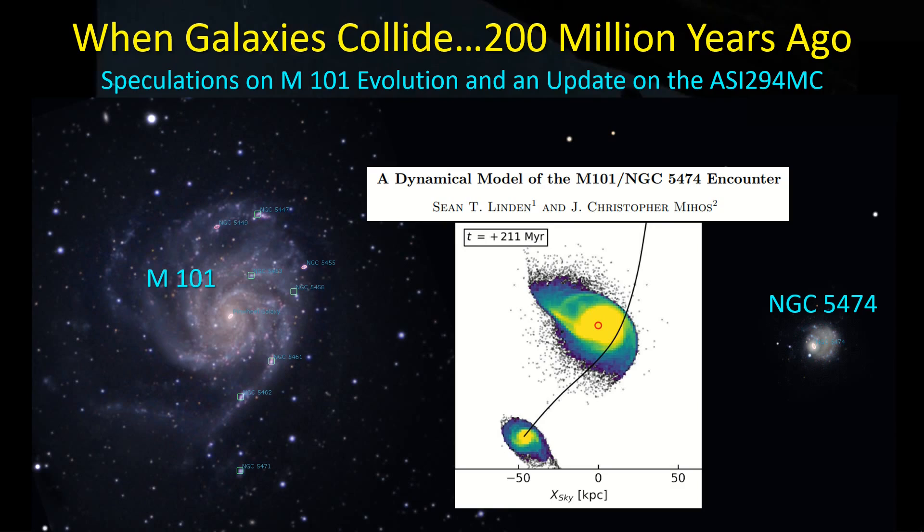I thought I'd share some of my experience with that setup, but I also stumbled across a paper that describes how some of the features we see with M101 may have been created by a fly-through event some 200 million years ago between M101 and NGC 5474.